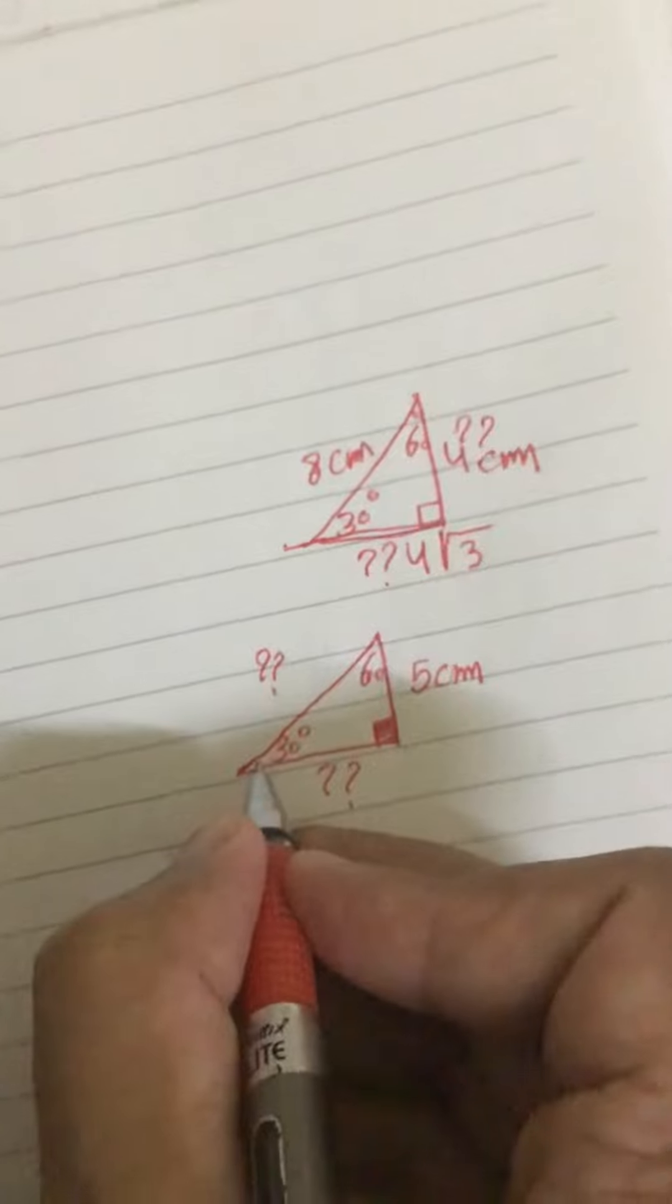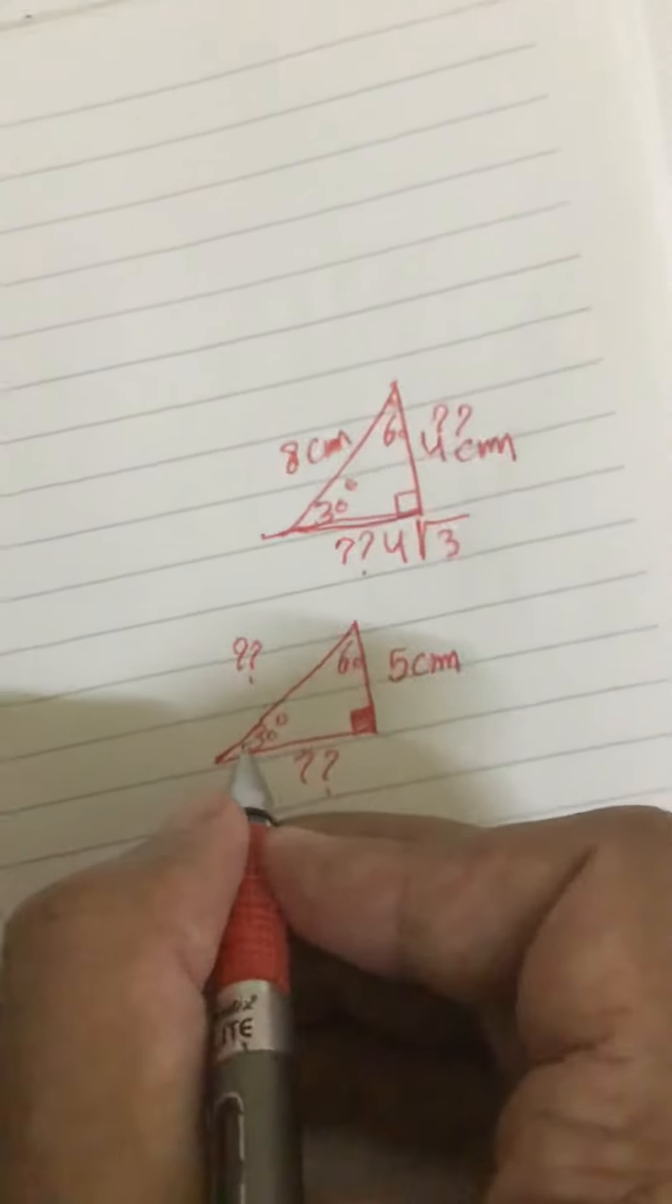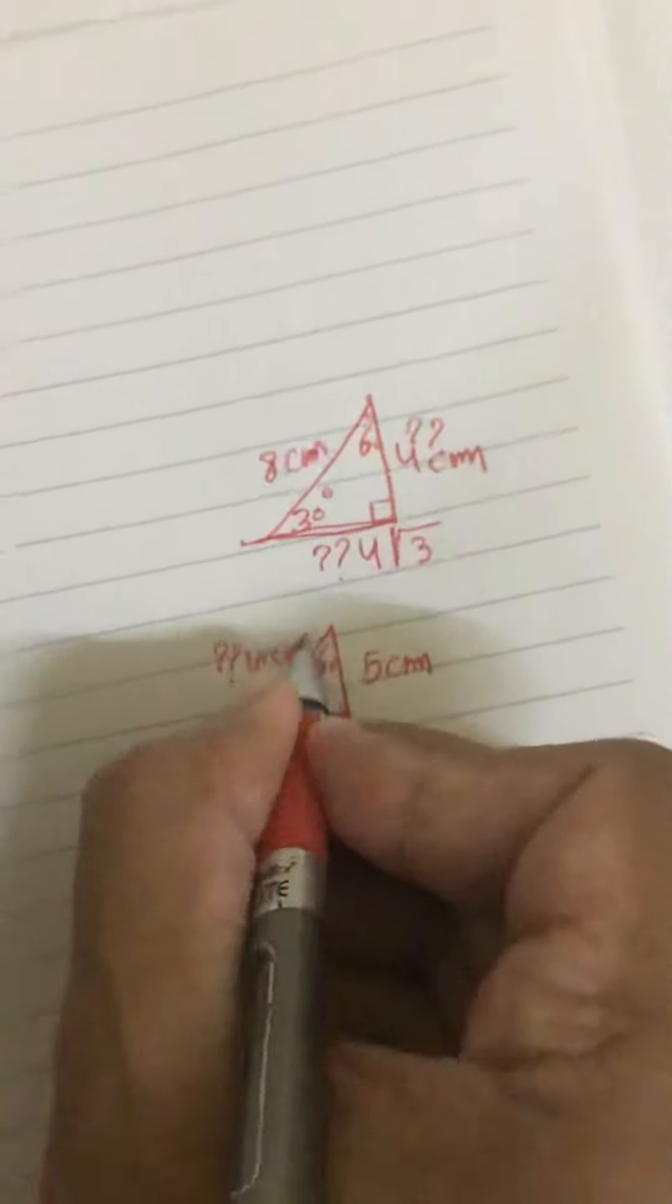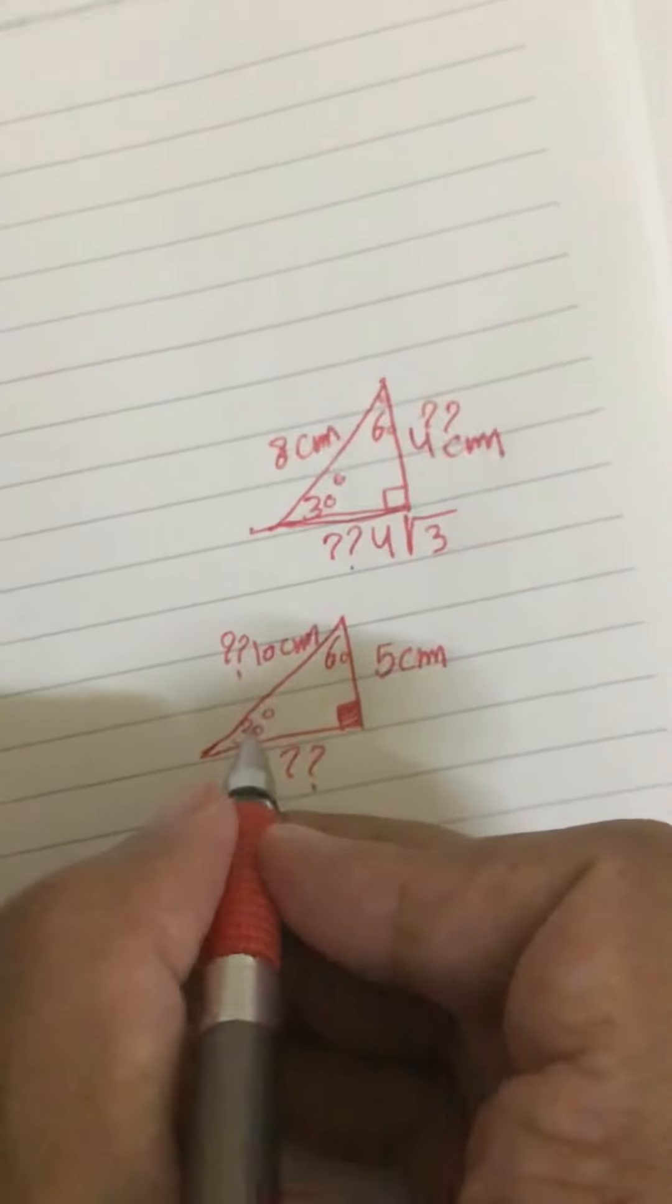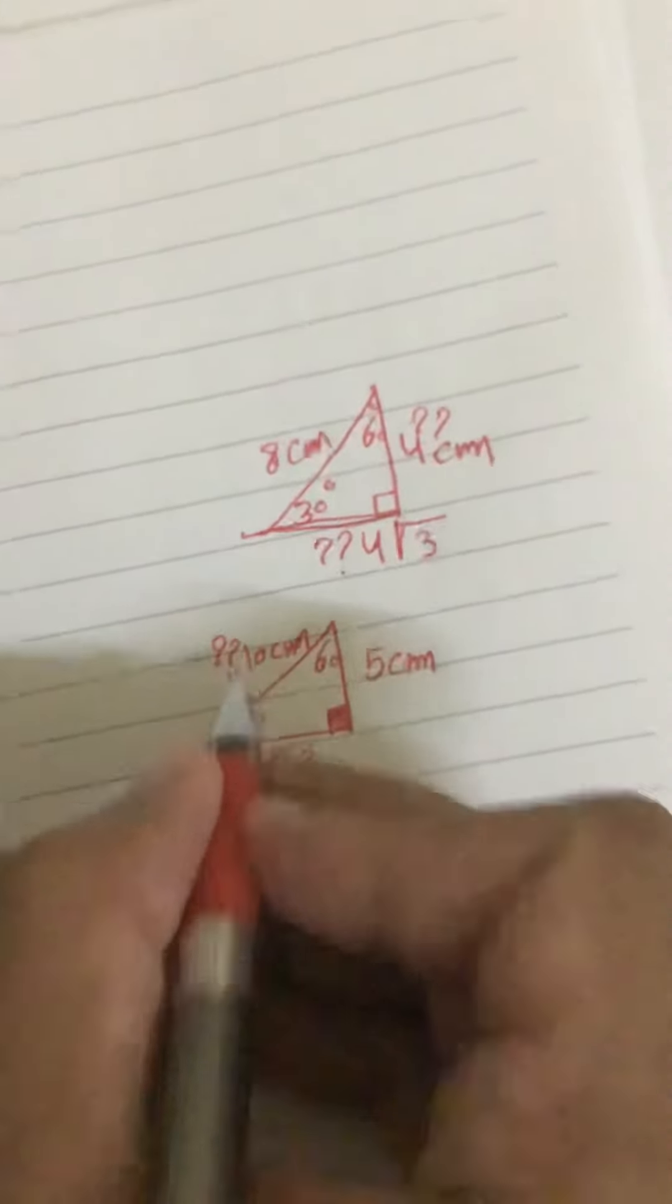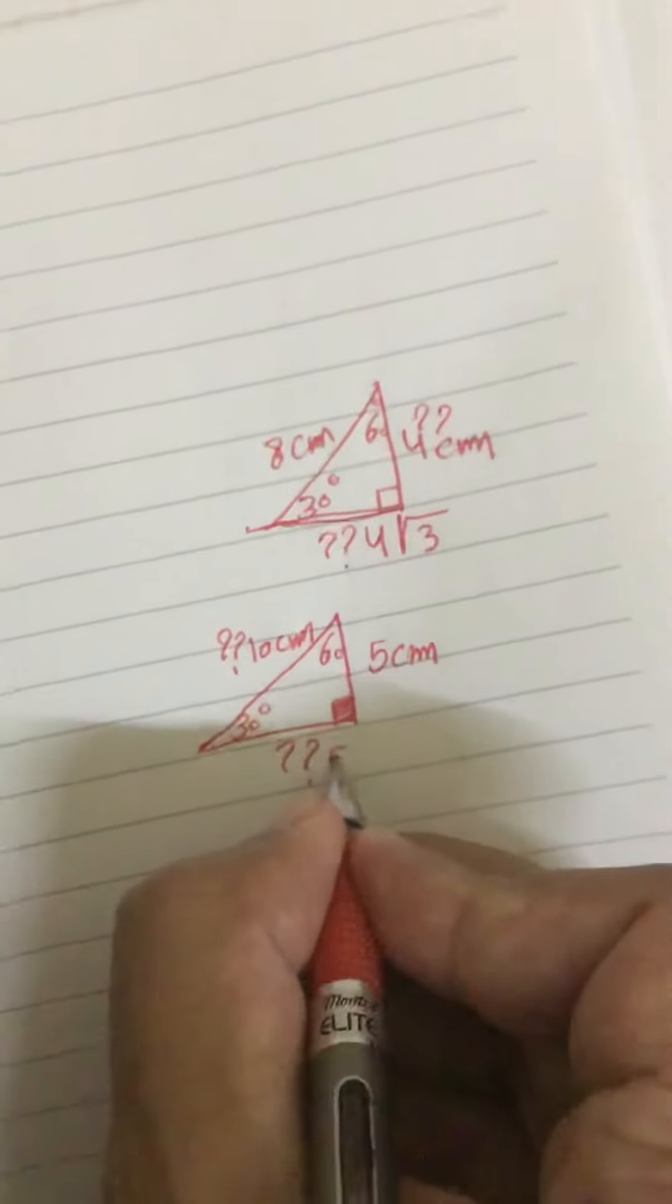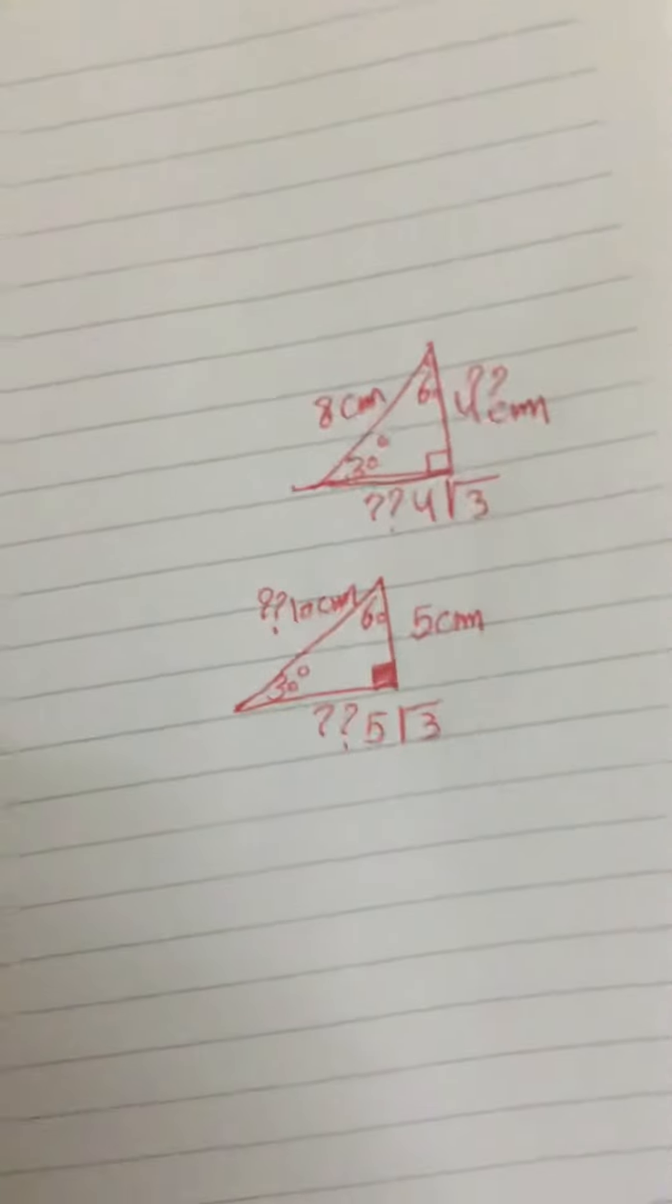We know already the side opposite the angle 30 will be half of the hypotenuse, this one five. What about this one? It will be 10 centimeter. So if you want the hypotenuse, look at the side opposite the 30 degree, this five times two, it will be 10 centimeter. What about this one? Half of the hypotenuse times square root of three, that will be five square root of three. Thank you for watching.